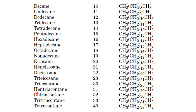So hentriacontane is 31. For 32, you use dotriacontane; du- means two and triacontane is for 30. For 33, tritriacontane. Similarly, 42 is called dotetracontane — du- for 2 and tetracontane for 40. 43 is tritetracontane, 44 is tetratetracontane, and so on. 98 is called octanonacontane, and 99 is called nonanonacontane.